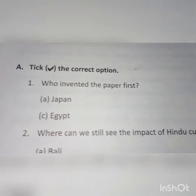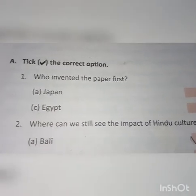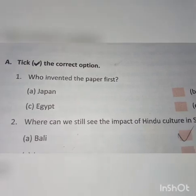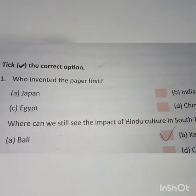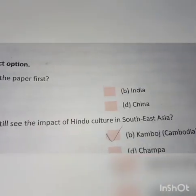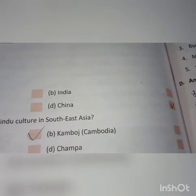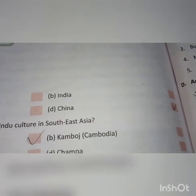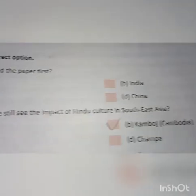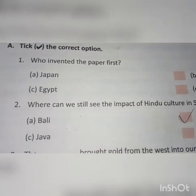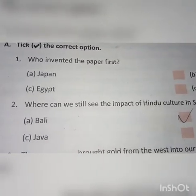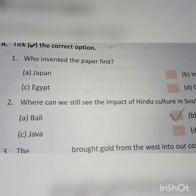Question number one: Who invented the paper first? The right answer is B — China.